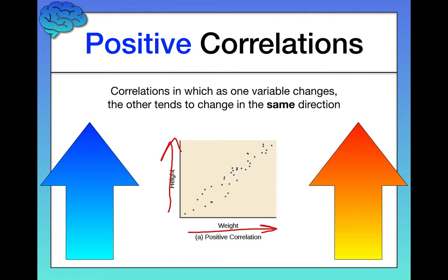But there are always going to be some exceptions. So you might have somebody who's really short and heavy. You might have someone else who's really tall but thin and doesn't weigh too much. And that's perfectly fine. But the positive correlation describes the relationship between the two variables in general, overall, across everybody.